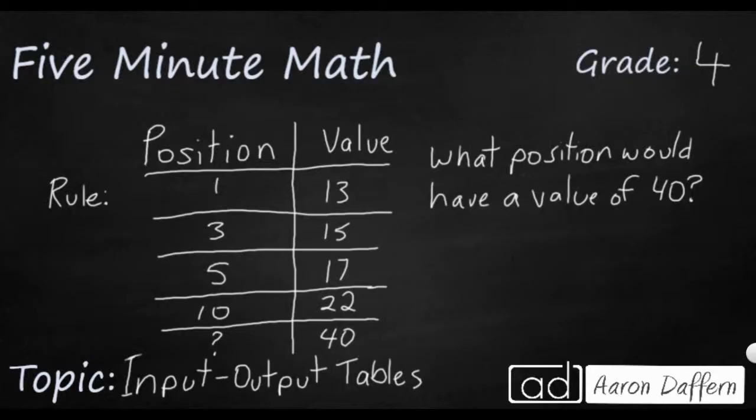It's either going to be an addition or a multiplication, simply because you're getting bigger. So those are the two operations that can help us get bigger. And as I'm looking at the values, 13, 15, 17, 22, 13 and 17 don't have any numbers I can multiply to it besides 1 and itself. Those are prime numbers.